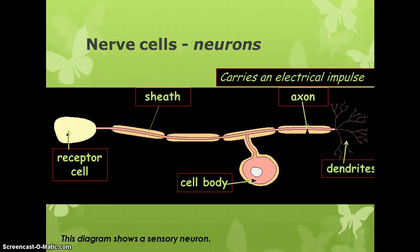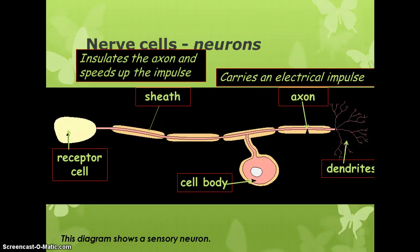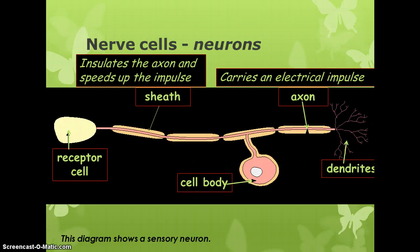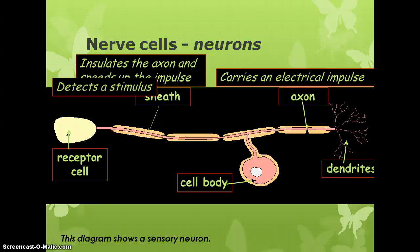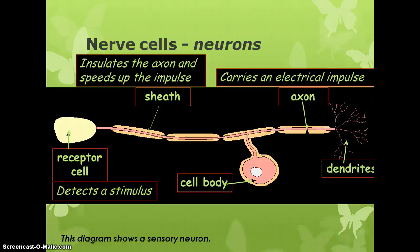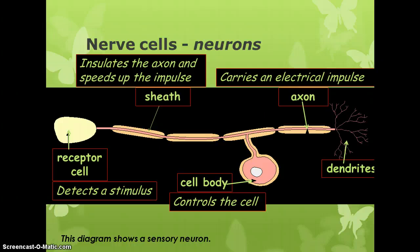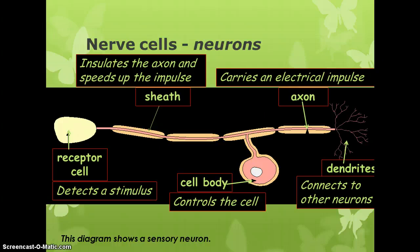The axon carries the electrical impulse — that's how your nerves communicate, sending electrical impulses down the axon. The sheath insulates the axon from the rest of the body, stopping the electrical signal from being lost and allowing the impulse to travel faster. The receptor end detects the stimulus. The cell body, particularly its nucleus, controls the cell. The dendrites connect one neuron to another, communicating across the gap called a synapse.